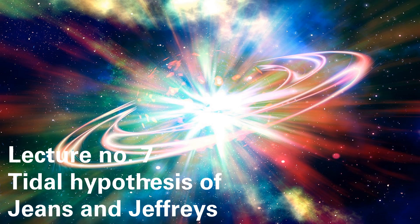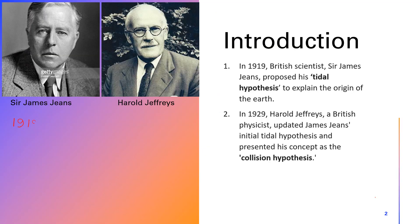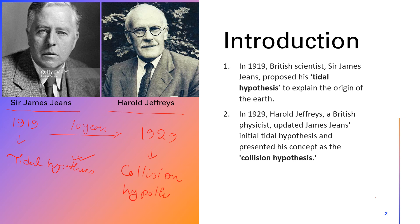Hello students, this is lecture number 7, a continuation of the origin of solar system series. Today we will discuss the tidal hypothesis of Jeans and Jeffries. In 1919, Sir James Jeans proposed the tidal hypothesis, and after 10 years, in 1929, Harold Jeffries modified it and named it the collision hypothesis.